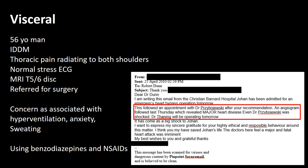Pain can also be referred from the visceral organs. This 56-year-old man was referred to me with a history of insulin-dependent diabetes mellitus. He had thoracic pain radiating to both shoulders. He'd had a normal stress ECG performed by his family practitioner, and an MRI identified a T5-6 disc, for which he was referred for transthoracic surgery. However, on taking a history, I was concerned about his periods of hyperventilation, anxiety and sweating, for which he'd been treated with benzodiazepines and anti-inflammatories. I sent him to another cardiologist who performed an angiogram, revealed major heart disease, and he underwent urgent surgery with total resolution of his symptoms.